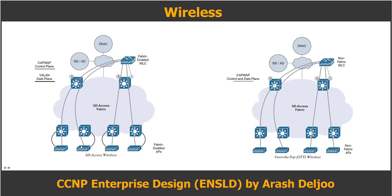In fabric mode wireless, CAPWAP tunnels are used between the fabric-enabled APs and fabric-enabled wireless LAN controllers for the control plane. For the data plane, VXLAN is used — traffic is encapsulated from the source AP to the receiver AP with VXLAN. So in fabric mode wireless, CAPWAP is used for the control protocol and VXLAN for the data plane. You need fabric-enabled wireless LAN controllers and fabric-enabled APs with the latest 802.11ac Wave 2 and Wave 1.